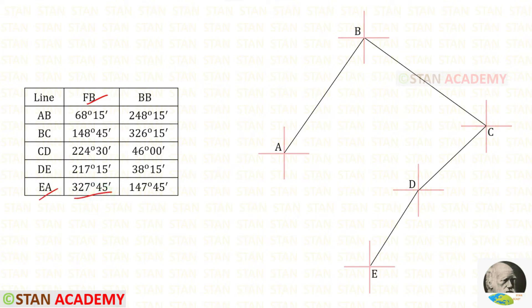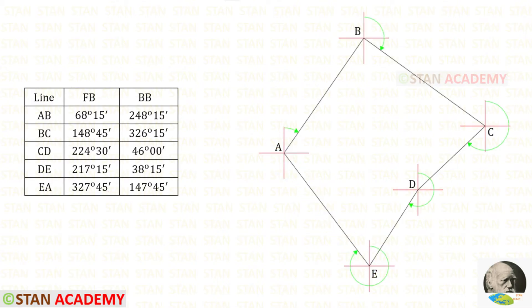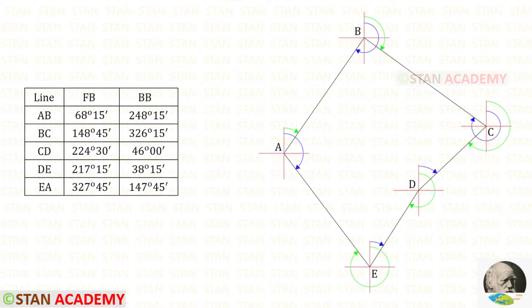The forebearing of EA is 200 degrees 45 minutes. Since it comes between 180 and 360, we draw a line and connect with station A. This indicates the forebearings. Now let us indicate the back bearings.